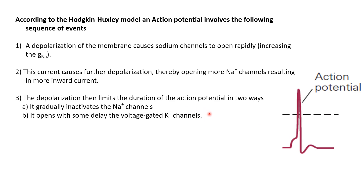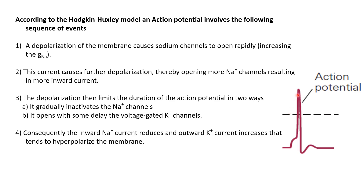But before the membrane potential reaches plus 55 millivolts, two things start to happen. First, the sodium channels, although they open quickly, also start to inactivate, as we have seen. Second, the voltage-gated potassium channels start to open. The inactivation of sodium channels reduces the inward current, and the opening of potassium channels produces an outward current — potassium ions flow out and try to make the membrane potential more negative, towards their equilibrium potential of minus 75 millivolts. As this happens, the membrane potential stops increasing and then rapidly falls. The rising phase is due to sodium ions and the falling phase is due to potassium ions.